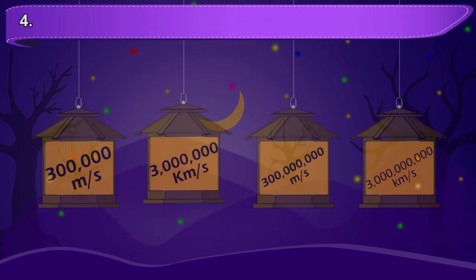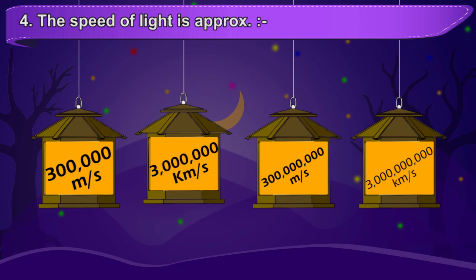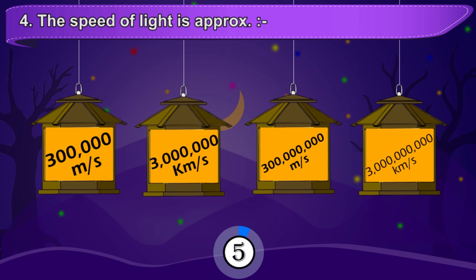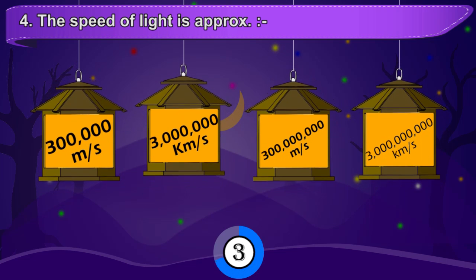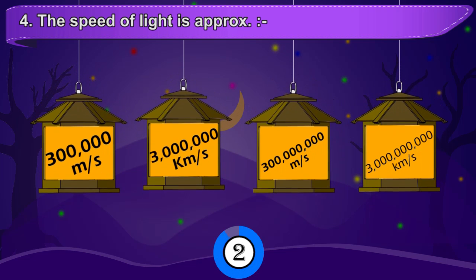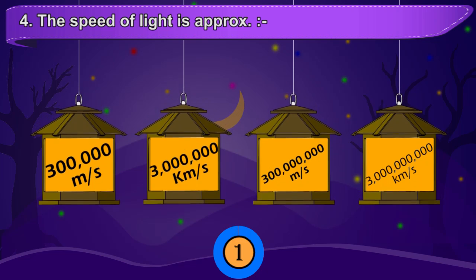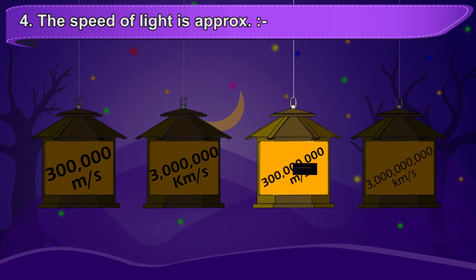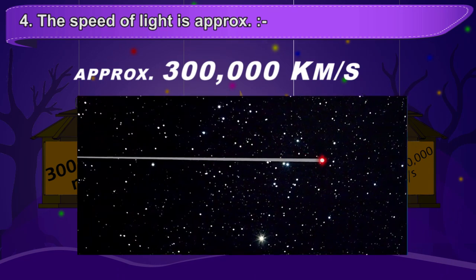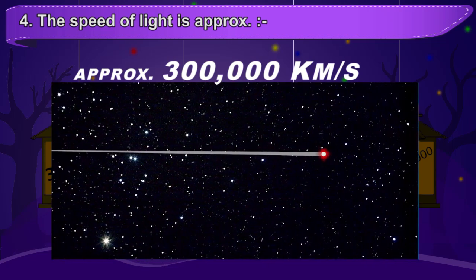The speed of light is 300 million meters per second, or 300,000 kilometers per second.